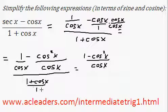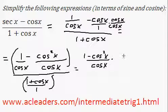I can view this as over 1 though, and whenever we're dividing two fractions, you can actually multiply by the reciprocal of the bottom fraction. So this will become 1 over 1 plus cos x.